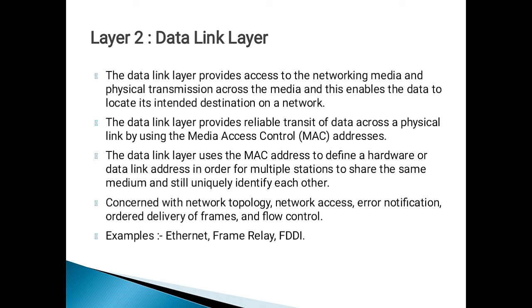The data link layer provides access to the networking media and physical transmission across the media, enabling data to locate its intended destination on a network. It provides reliable transit of data across a physical link by using media access control addresses. The data link layer uses the MAC address to define a hardware or data link address, allowing multiple stations to share the same medium and still uniquely identify each other.